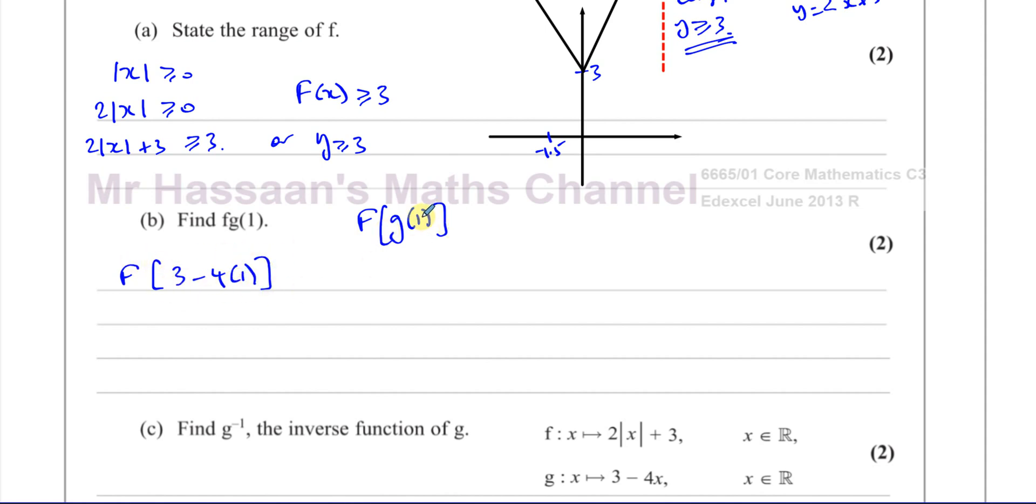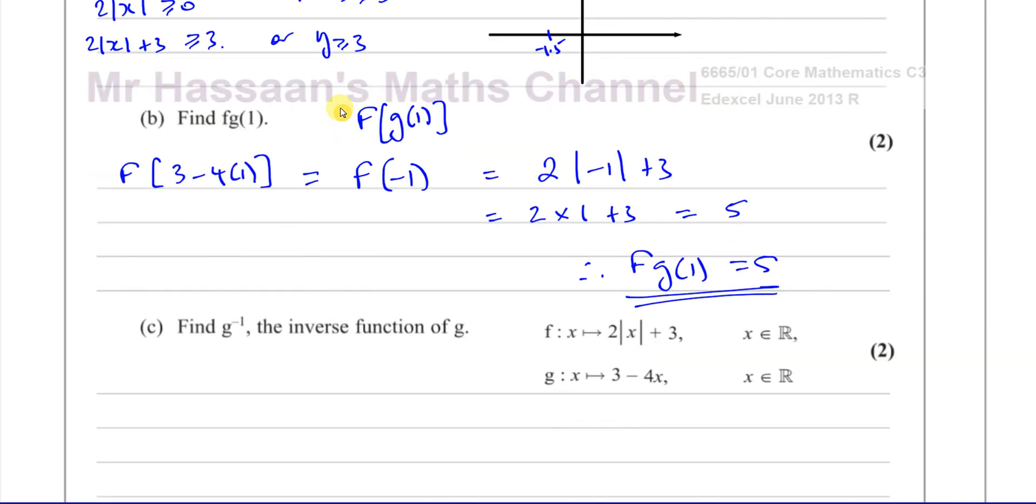This is when you put 1 instead of x in function g. So that's going to be f, and this is 3 minus 4, which is minus 1. So we're going to put minus 1 now into function f. That's going to be 2 times minus 1 plus 3. Now remember what I said, this becomes 2 times positive 1 plus 3, because whatever goes inside here becomes, if it's positive, it stays as it is. If it's negative, it becomes positive. So that's going to give you 5. So therefore we can say fg of 1 is equal to 5. So there's part b done.